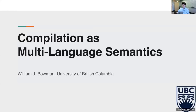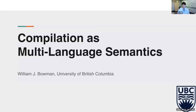Let me start with a spoiler for my entire talk. My thesis is that the key problem in compiler correctness is modeling language interoperability. If you have a good model of interoperability between your source and target language, you can pretty much prove compiler correctness. If you ignore all of that, proving whole-program compiler correctness is next to trivial. The real problem is linking and defining what it means for two languages to interoperate.